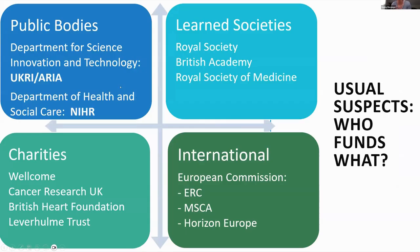Who funds what? Broadly there are four categories in the UK: public bodies, learned societies, charities, and international funding we are now eligible for. Public bodies are generally funded through the government — for example, DSIT, the Department of Science, Innovation and Technology, funds the UK Research Councils and ARIA. The Department of Health and Social Care funds the National Institute of Health Research.